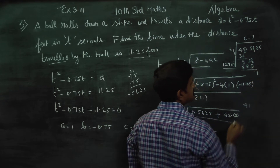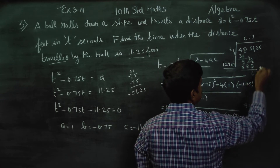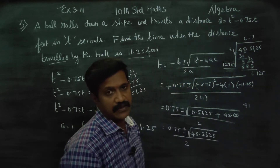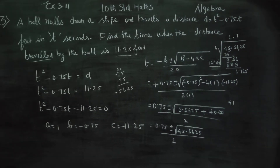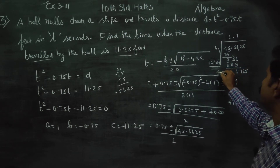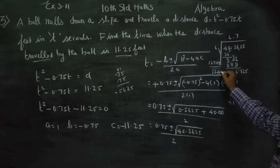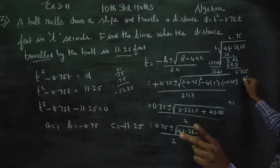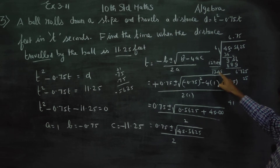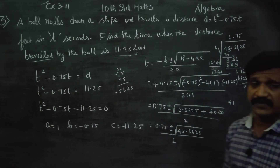Working through the arithmetic: 4 into 1 into 11.25 gives 45. So under the square root we have 0.5625 plus 45, which equals 45.5625. Taking the square root of 45.5625 gives 6.75. So the answer inside the formula is 0.75 plus or minus 6.75.